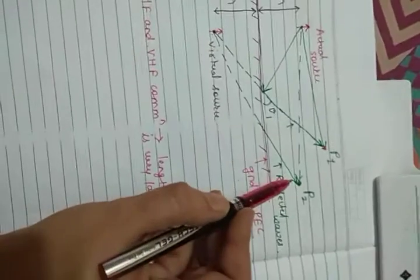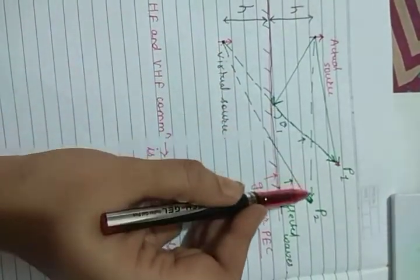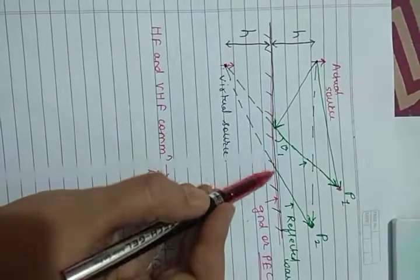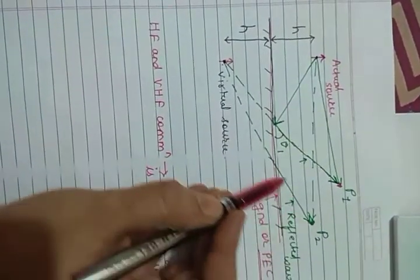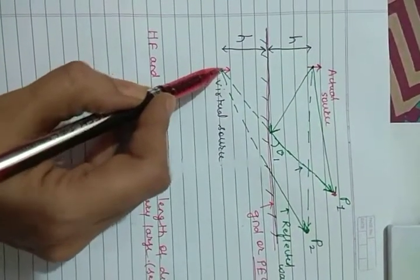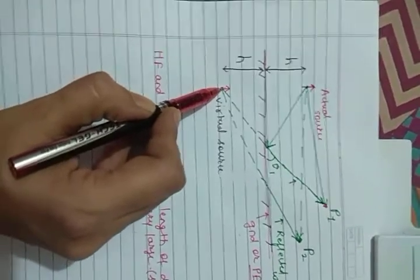Similarly, at point P2, there will be direct waves coming from the actual source and the waves will be reflected back. And if we again extend this line, it will meet at the same point.